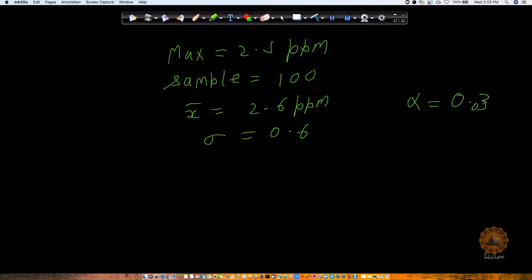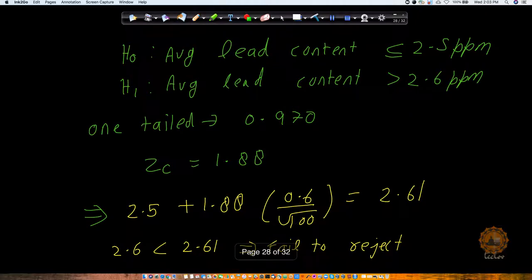So we would like to consider only in 3% of the case we are going to reject our null hypothesis. What will be the null hypothesis? Null hypothesis is going to be that your lead content is less than or equal to 2.5 percent, and your H1 alternate hypothesis is going to be that it's greater than 2.6 ppm.